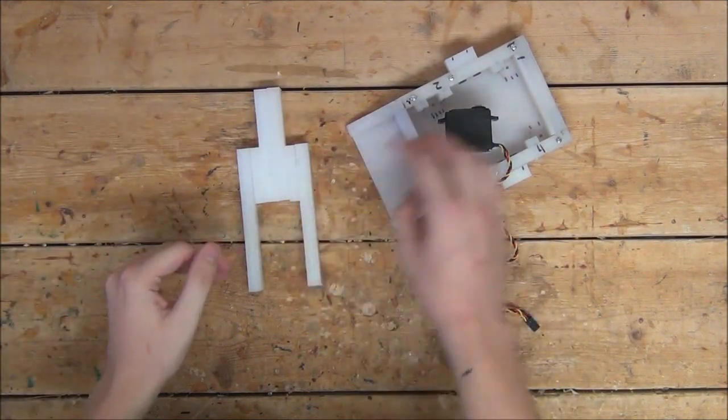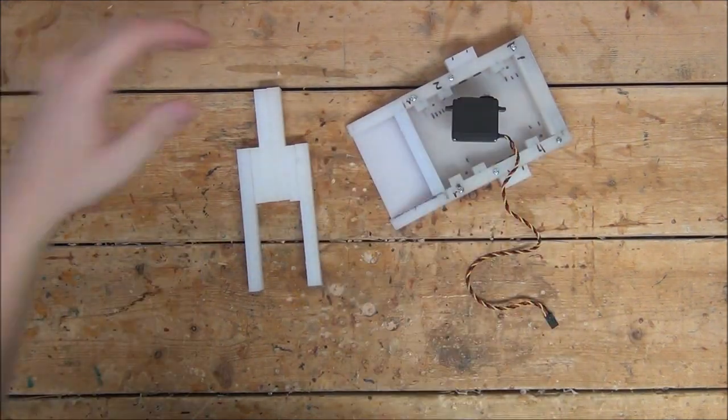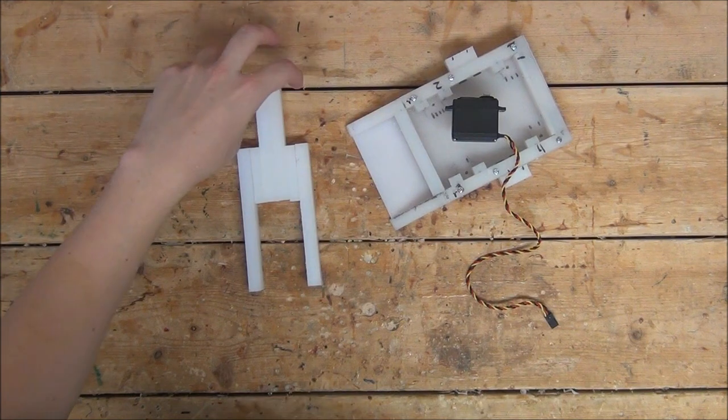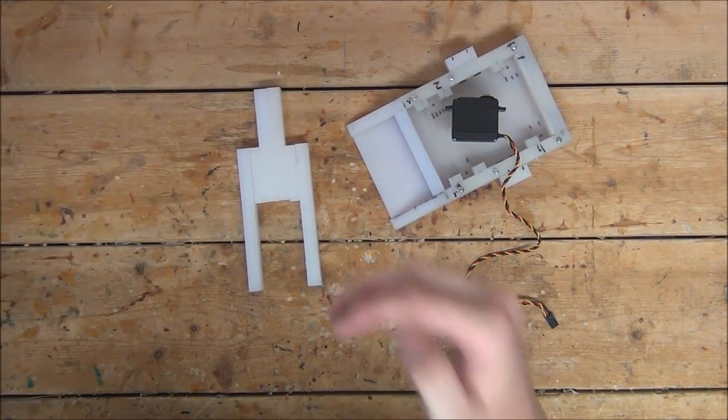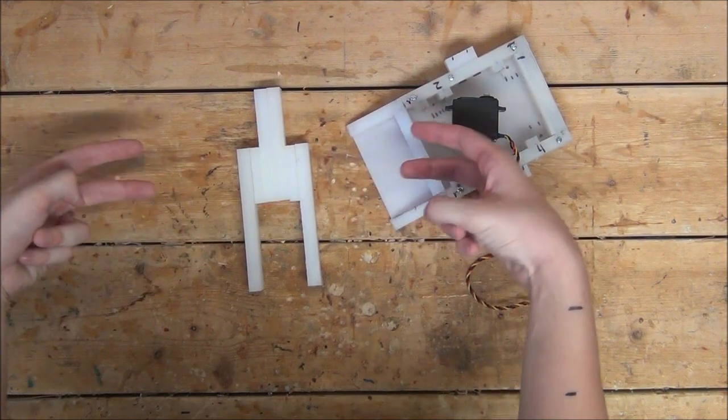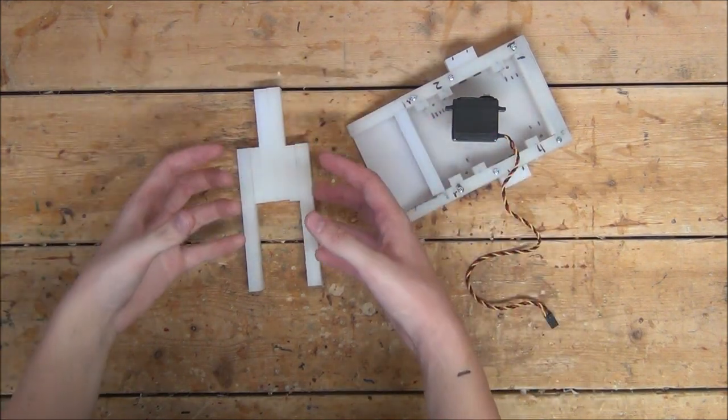As you can see, the bottom is plenty large enough to fit our servo in, the top is large enough to bolt the head of the arm on, which we have yet to build, and the center overlapping sections are plenty wide enough to put in some screws and make everything structurally sound.